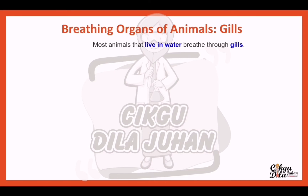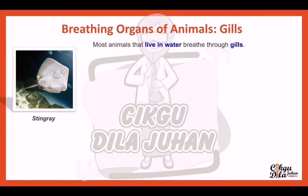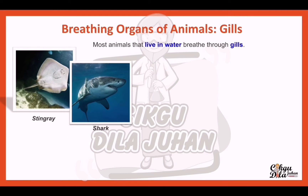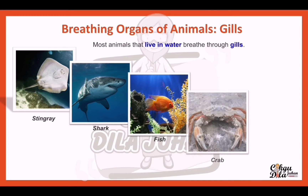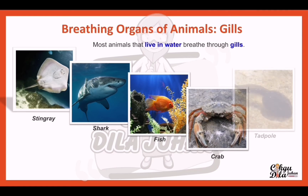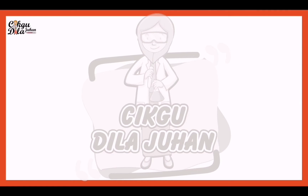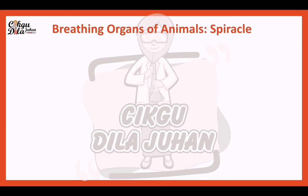The next breathing organ is gills. Most animals that live in water breathe through gills, such as stingray, shark, fish, and crab.